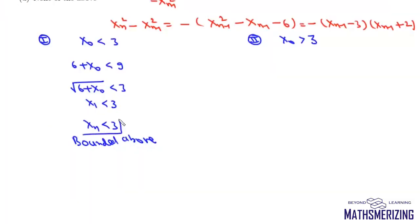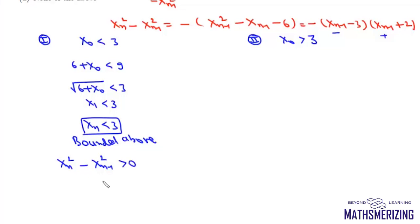If xn is less than three, then the factor (xn minus one minus three) is negative and (xn minus one plus two) is positive. With the minus sign, we get xn squared minus xn minus one squared greater than zero, that is xn is greater than xn minus one. So the sequence is monotonically increasing.